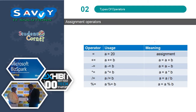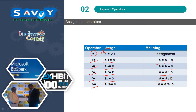Now Assignment Operators. The equals sign represents assigning — for example, 20 is assigned to A, or some calculation is assigned to a variable. The variants are: plus-equals, minus-equals, multiply-equals, divide-equals, and modulo-equals. A += B means A = A + B; A -= B means A = A - B; A *= B means A = A * B; A /= B means A = A / B; A %= B means A = A mod B.